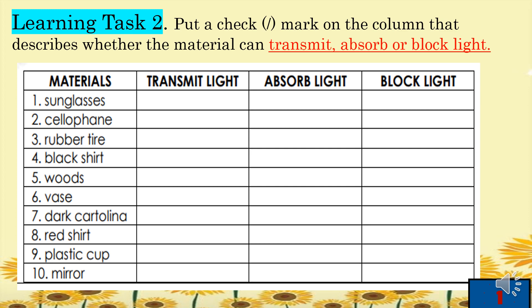Here are the answers: sunglasses — transmit light; cellophane — transmit light; rubber tire — block light; black shirt — absorb light; woods — absorb light; vase — block light; dark cartolina — absorb light; red shirt — absorb light; plastic cup — transmit light; and mirror — transmit light.